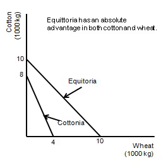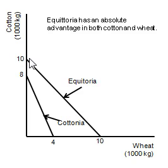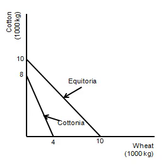So let's take a look at the opportunity costs here. What we want to do is convert these numbers to very simple numbers — we want to convert units of cotton into one. For every one unit of cotton, how many units of wheat do we give up? So let's convert this ten into one by dividing it by itself — divide it by ten and we get one. Then we divide the wheat number by ten as well, and we get a one-to-one ratio. For every one unit of cotton we produce in Equatoria, we give up one unit of wheat.